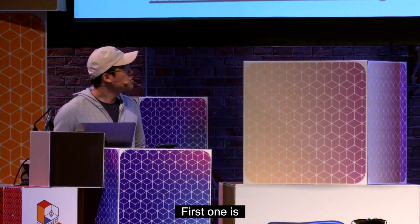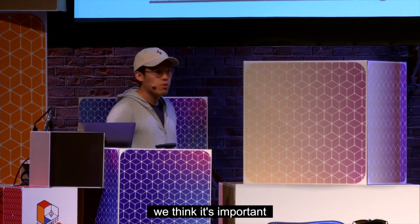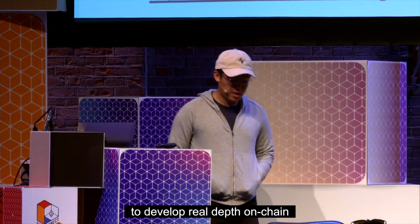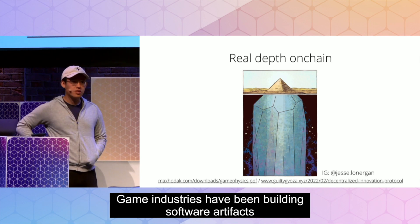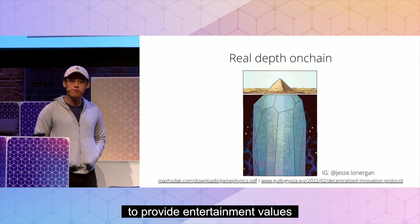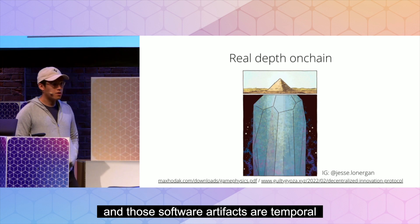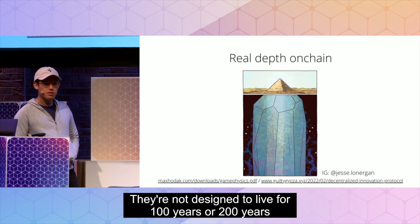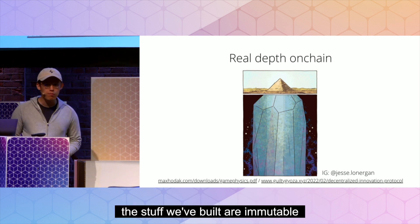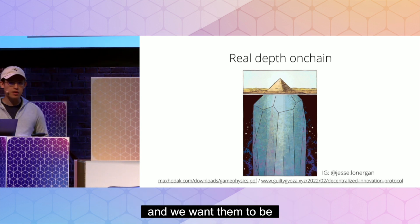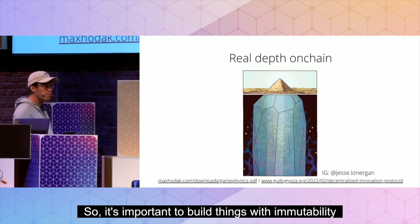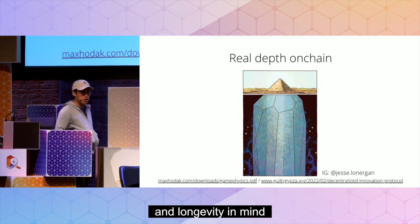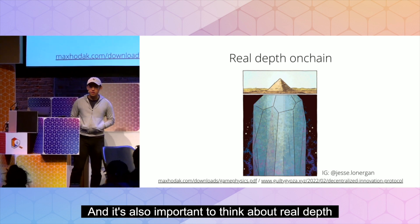It's fast-evolving. The first one is we think it's important to develop real depth on chain. The game industry has been building software artifacts to provide entertainment value, and those software artifacts are temporal — they're not designed to live for 100 or 200 years. But on the blockchain, the stuff we build is immutable and we want it to be the infrastructure powering the future. So it's important to build things with immutability and longevity in mind, and it's also important to think about real depth.